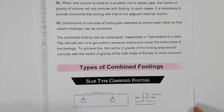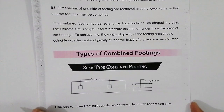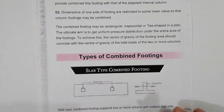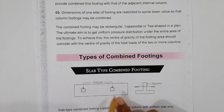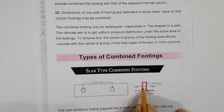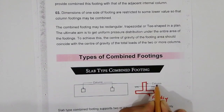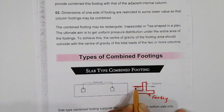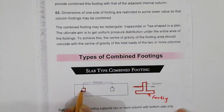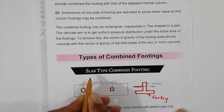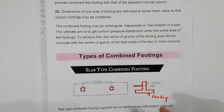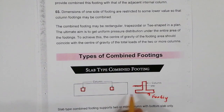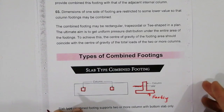Now let's look at types of combined footing. The first type is the slab type combined footing. This is the footing, this is the column, and this is the natural surface level or ground level. One column, the other column — this is called slab type combined footing. The slab combined footing supports two or more columns with a bottom slab only.